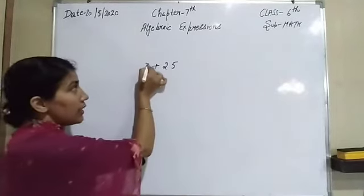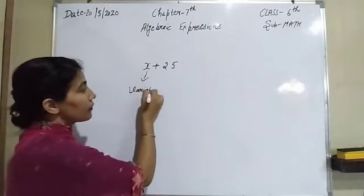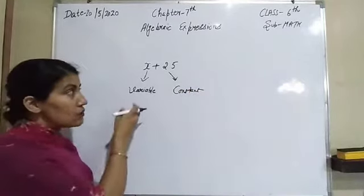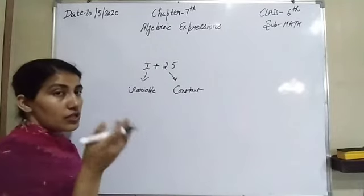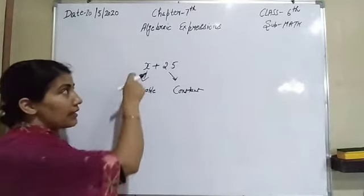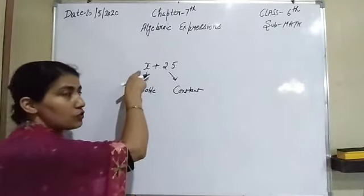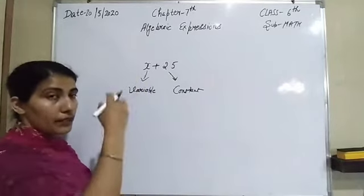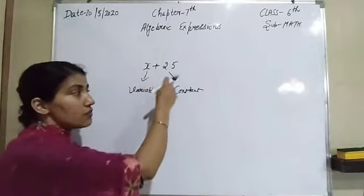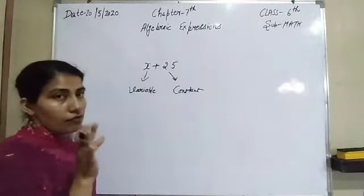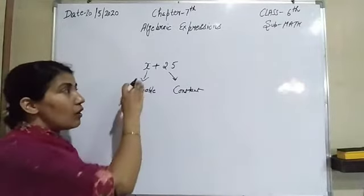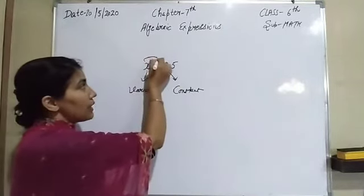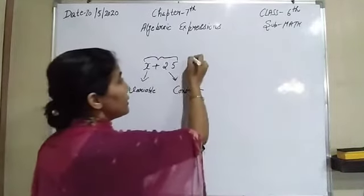Here, x is a variable and 25 is a constant. A variable is something whose value varies — that means it is always going to change. When we put x as 1 it becomes 1, x as 2 it becomes 2, x as 3 it becomes 3. A constant like 25 will always remain 25 — it never changes. So these expressions become an algebraic expression.